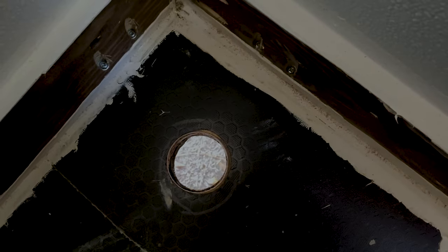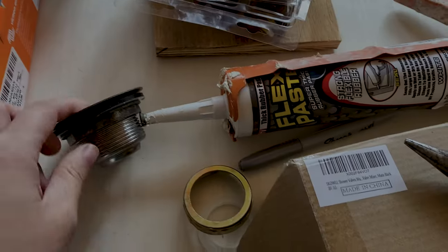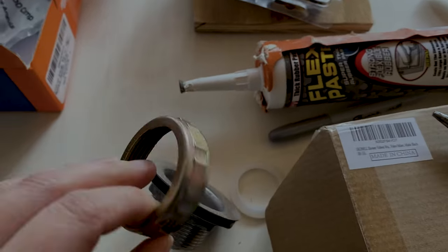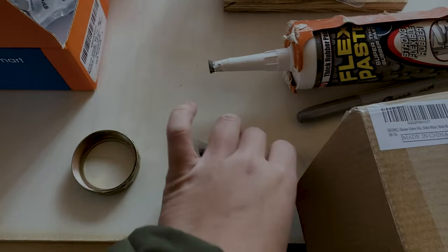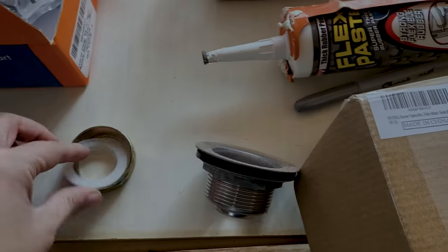I filed down the really sharp edges of the bottom there. I got some Rust-Oleum primer slash enamel and I sprayed that up in there just to protect from rust. There's only one way that the shower pan fits in. So here's my drain.